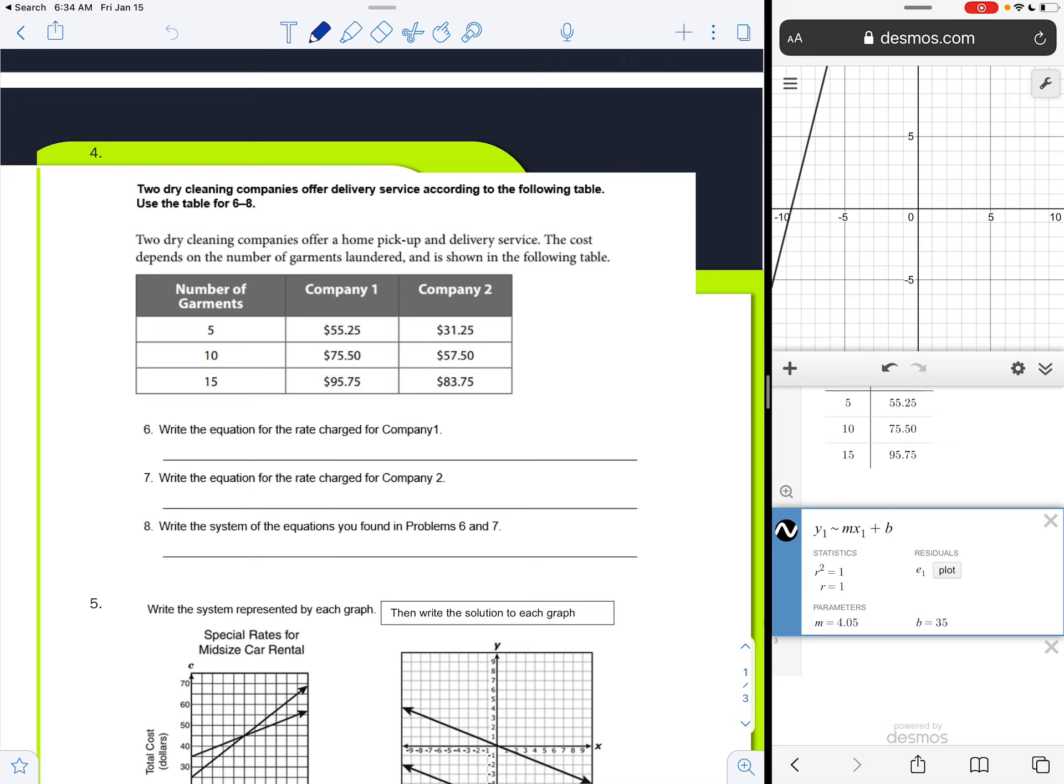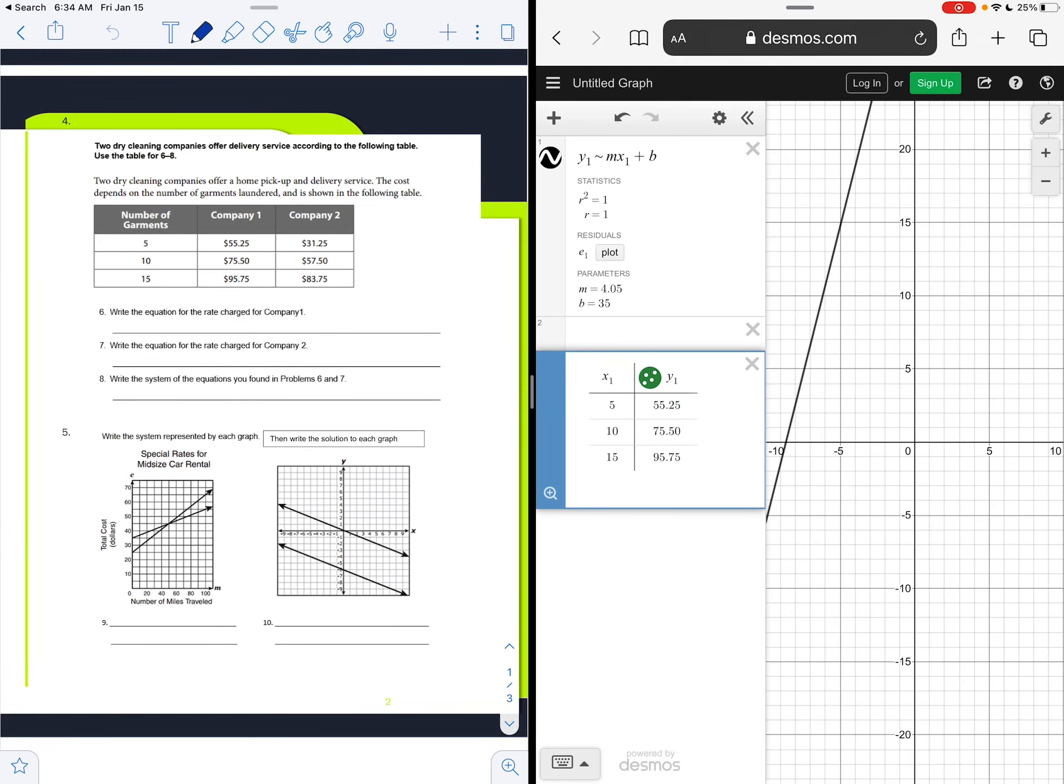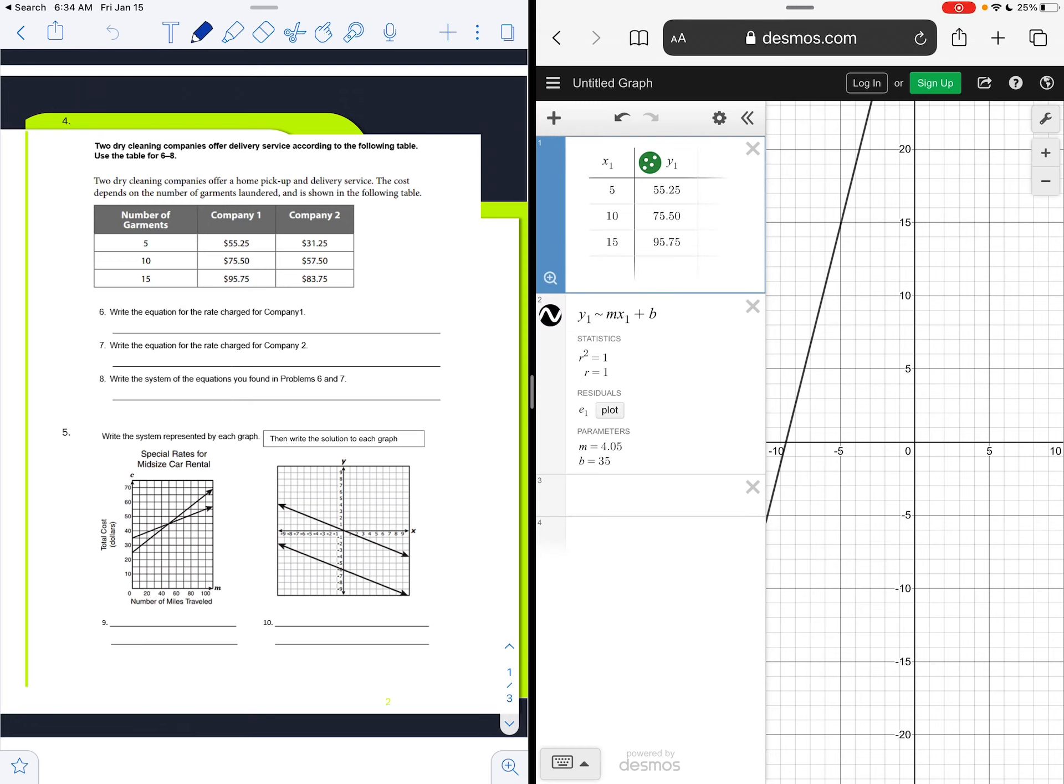They have 5, 10, and 15 as the number of garments, and then we have the prices. I went ahead and completed the first company here in Desmos calculator. We input the information in the table here, and then we got an equation written. They gave us the slope and the y-intercept, and now we can write it in slope-intercept form. So we have y equals 4.05x plus 35.